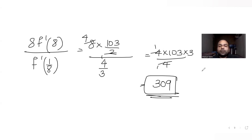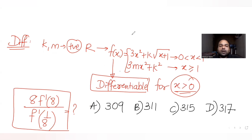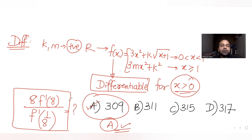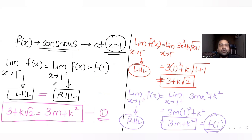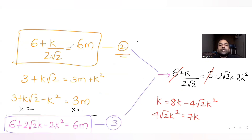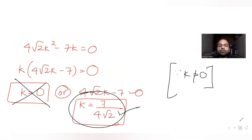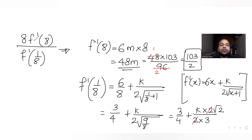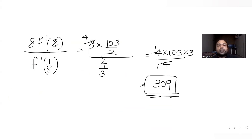The correct answer is 309, which matches option A. To summarize the approach: since f of x is differentiable, it must be continuous — equating left and right hand limits at x equal to 1 gave the first equation in k and m. Equating left and right hand derivatives at x equal to 1 gave the second equation. Solving simultaneously yielded k and m, which were then used to evaluate the final expression.